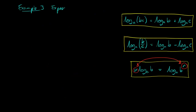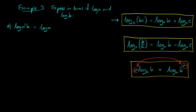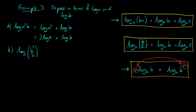Next, we go the other way — splitting logarithms into their component parts, expressed in terms of log a and log b. For log of a squared b: we use the multiplication rule to split the a squared and b parts into two logarithms added together, then use the power rule to bring the 2 to the front, giving 2 log a plus log b. For log of b cubed over a: using the division-subtraction rule we split it, then use the power rule to bring the 3 to the front, giving 3 log b minus log a.